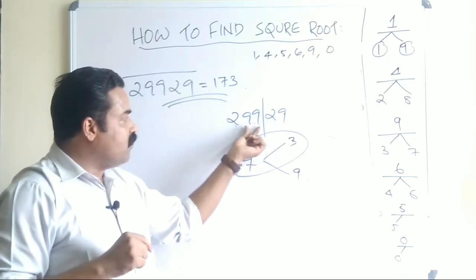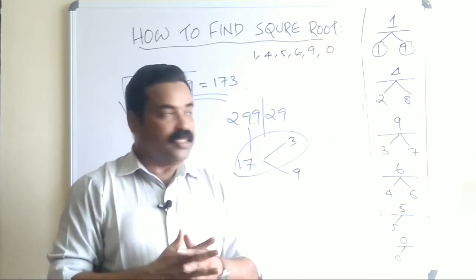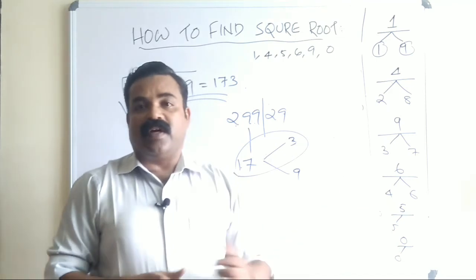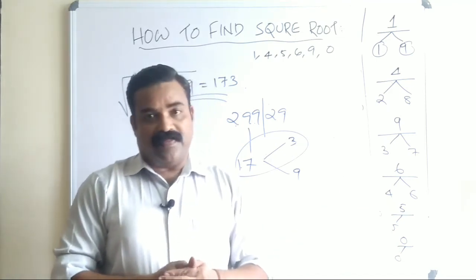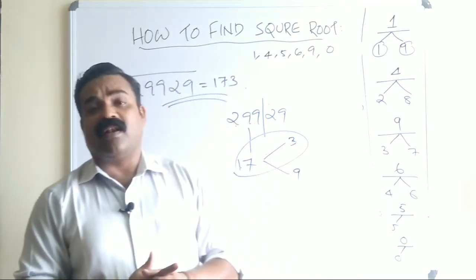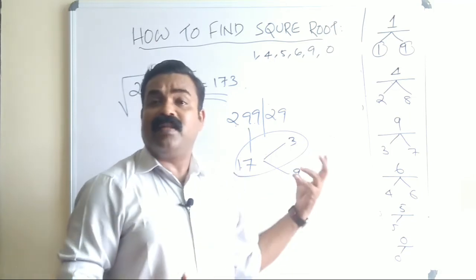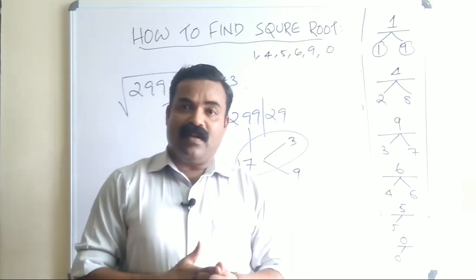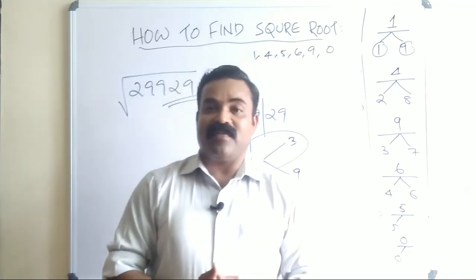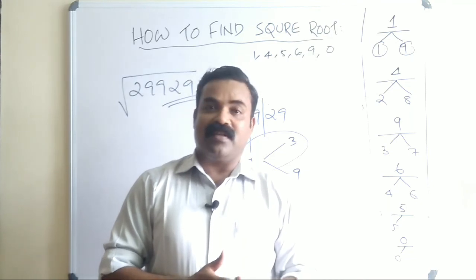This method can be used for any number of digits. From the right, leave two digits; find the maximum square root within the remaining digits; then use the last-digit pattern to narrow down the answer. This will be very helpful when you prepare for competitive exams — you can save a lot of time. All the very best! For more videos, please subscribe to My Exam Coaching. We will be back with more videos and study materials. Bye bye!